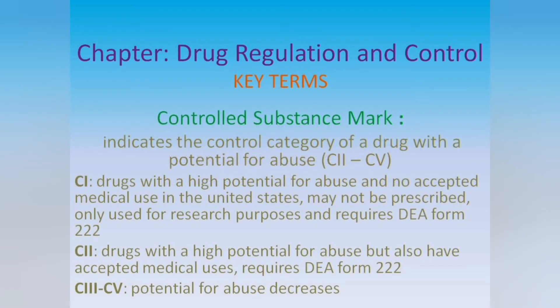Controlled Substance Mark: indicates the control category of a drug with a potential for abuse, C2 to C5. C1 are drugs with a high potential for abuse and no accepted medical use in the United States; may not be prescribed, can only be used for research purposes, and requires DEA Form 222. C2 are drugs with a high potential for abuse but also have accepted medical uses, and also requires DEA Form 222.